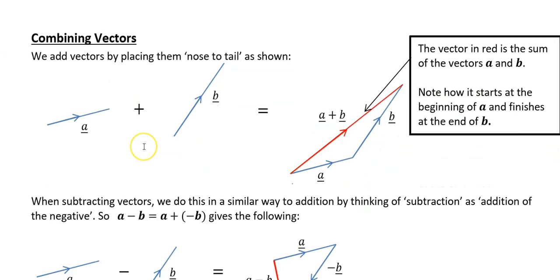If we're combining vectors we use the nose to tail method. If you're doing vector a plus vector b, you do your a first and then where a finishes you go along your b.